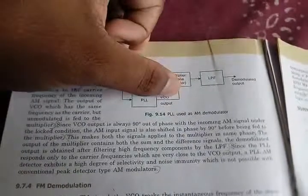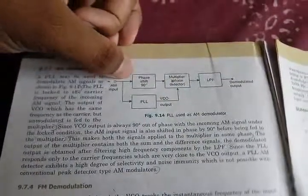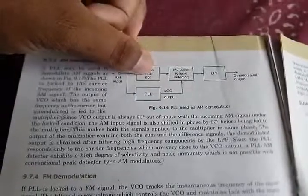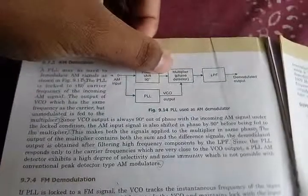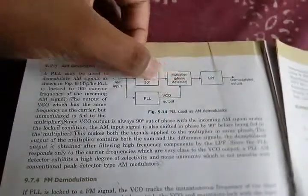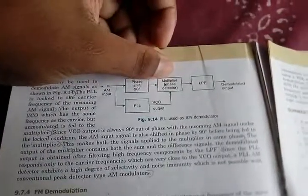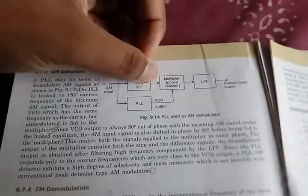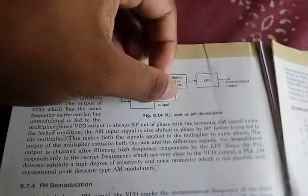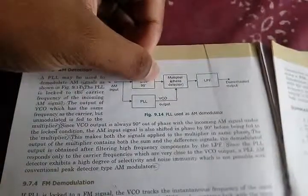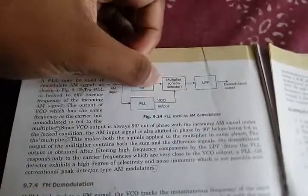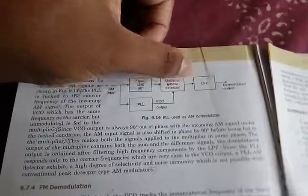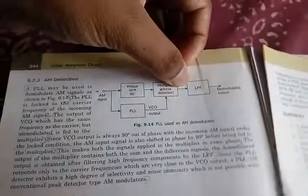In the 90 degree phase shift, the two signals are not in the same phase. The multiplier outputs both signals.